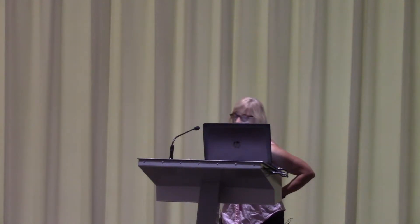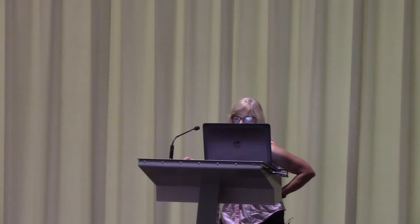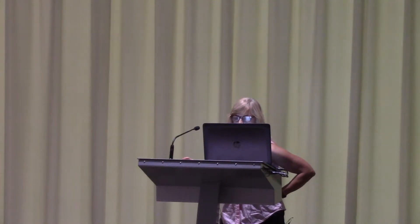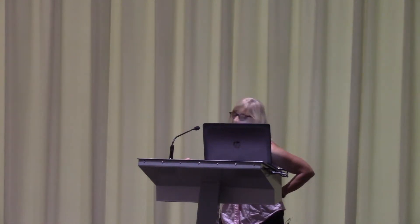This is hairy ilite. All these fine fibers — that's the hairy ilite. You can see it's deposited itself right in one of the pores and into this pore space, pore throat space, right here. So you can imagine flow coming through this rock. What's going to happen if you have turbulent flow? What's going to happen if all those fibers break off and start to migrate?